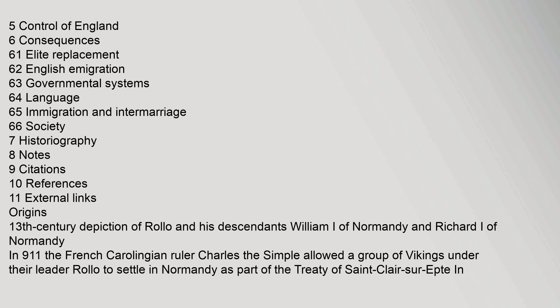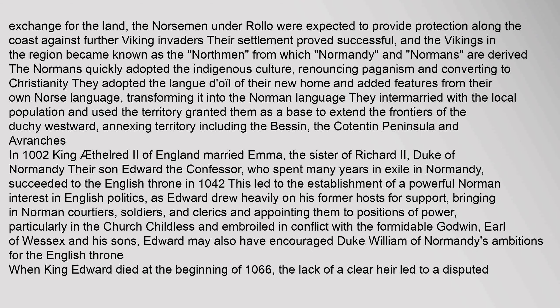In 911, the French Carolingian ruler Charles the Simple allowed a group of Vikings under their leader Rollo to settle in Normandy as part of the Treaty of St. Clair-sur-Epte. In exchange for the land, the Norsemen under Rollo were expected to provide protection along the coast against further Viking invaders. Their settlement proved successful, and the Vikings in the region became known as the Northmen, from which Normandy and Normans are derived. The Normans quickly adopted the indigenous culture, renouncing paganism and converting to Christianity.